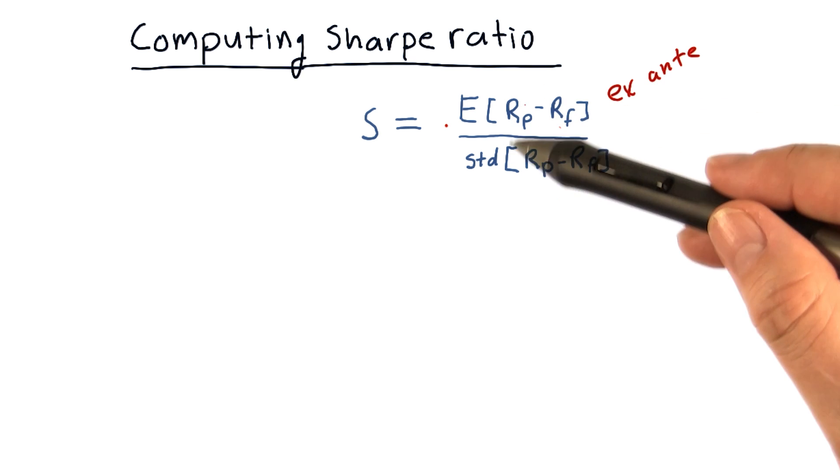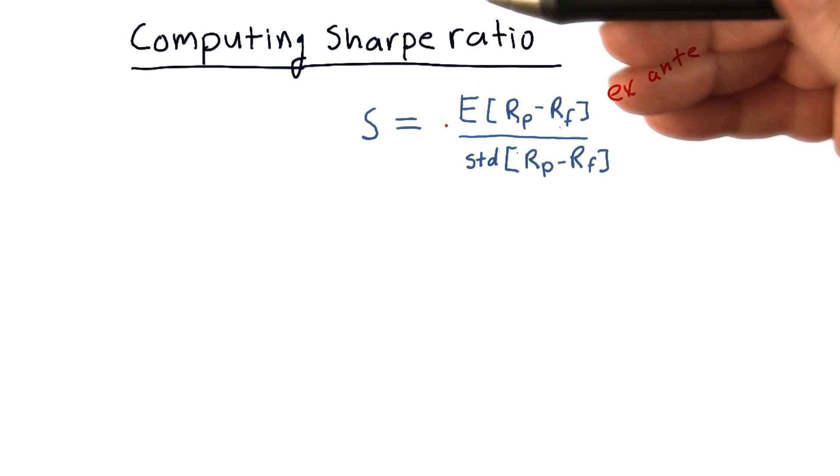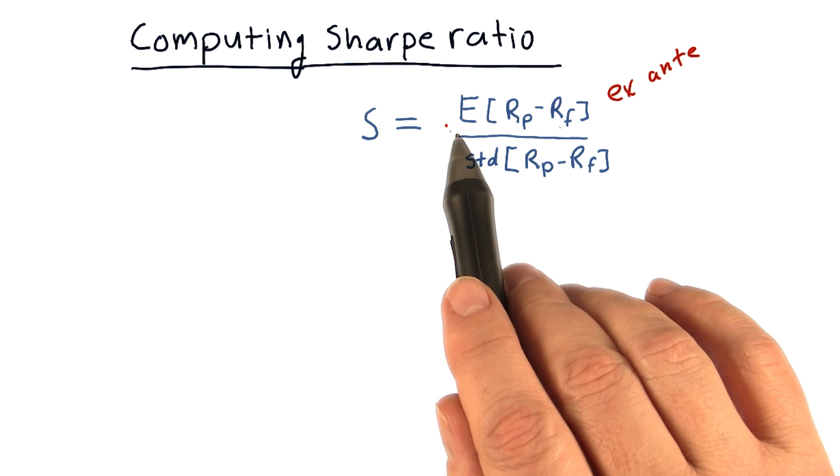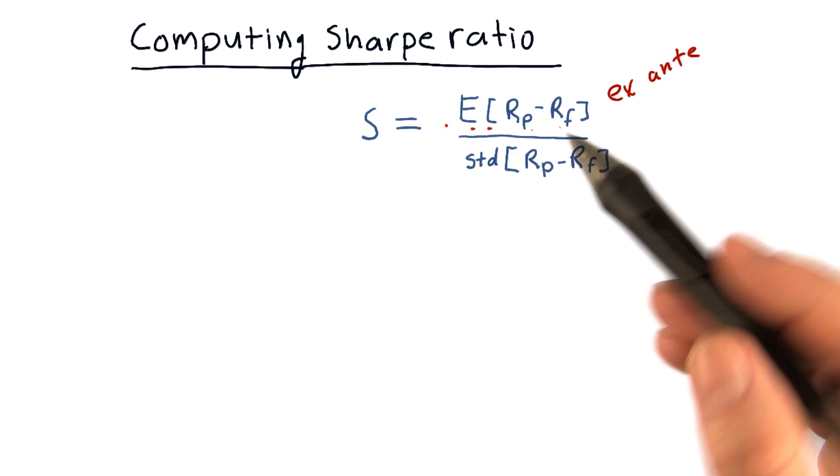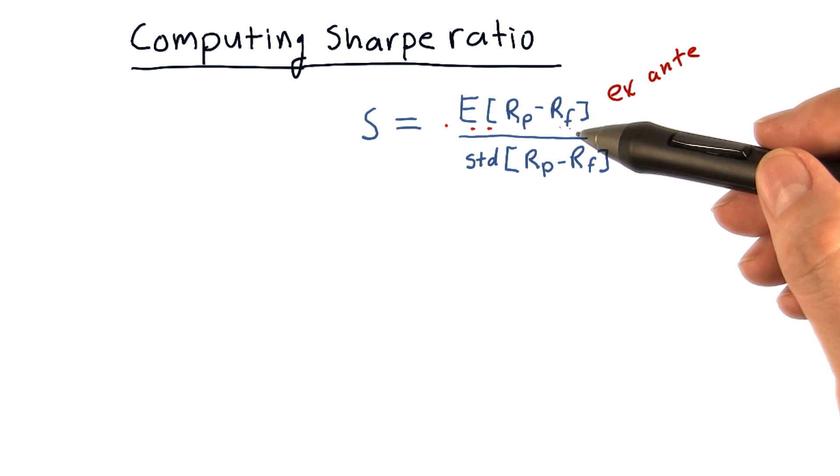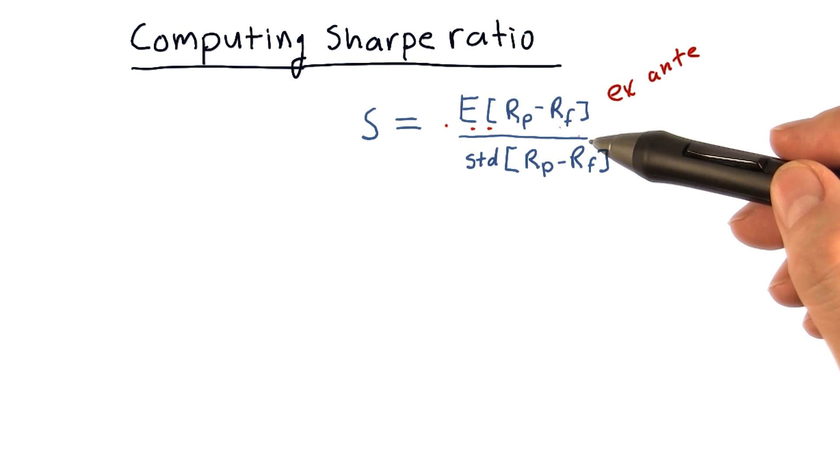Now to calculate this in reality, we need to look back at those values. So for instance, the expected value of this difference is just simply the mean of what that difference was over time.